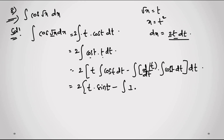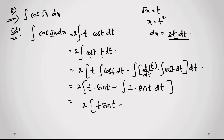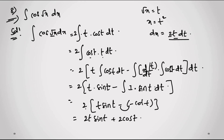Continuing: integral of sin(t) dt = −cos(t). So it becomes 2 into [t·sin(t) minus (−cos(t))], which gives 2t·sin(t) + 2cos(t). Substituting back t = √x, the answer is 2√x·sin(√x) + 2cos(√x) + c. This is the answer for question 8.